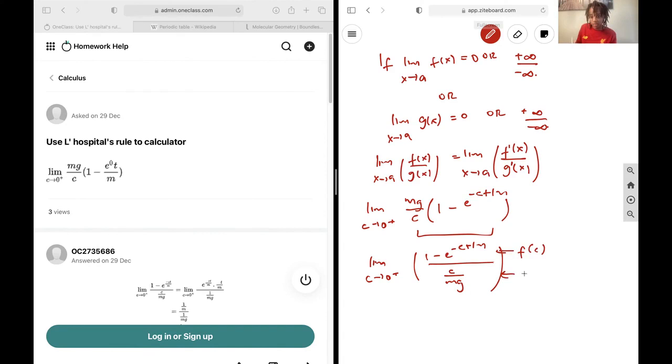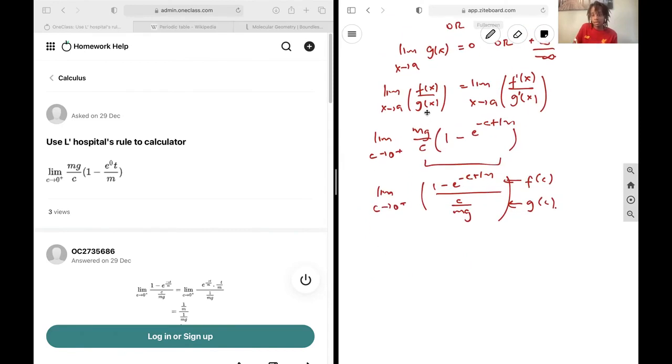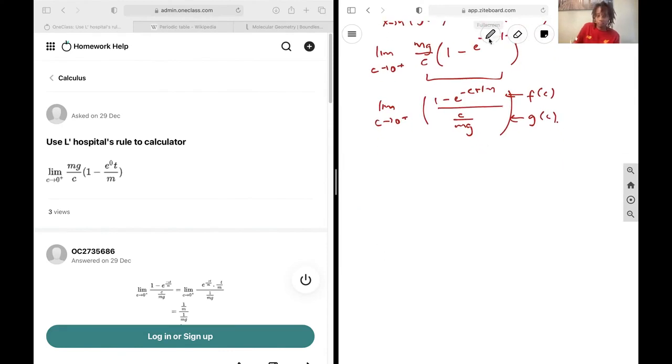Next up, we have that this is equal to our f(c) and this is equal to our g(c). We're going to take the derivative of both of them so that we can get the answer to this.